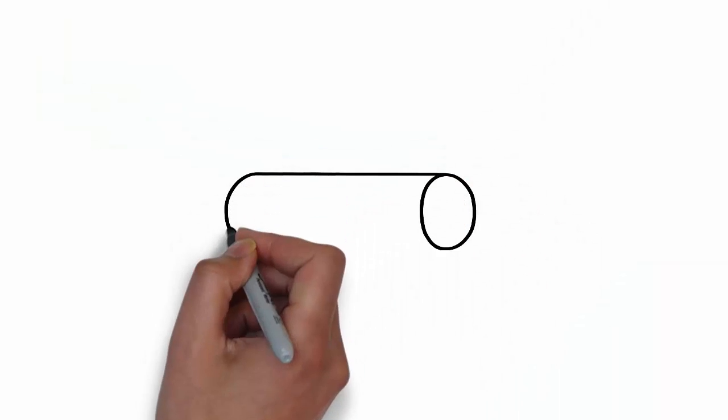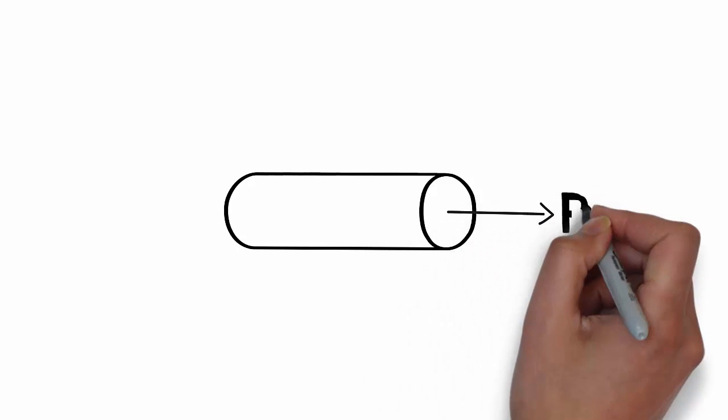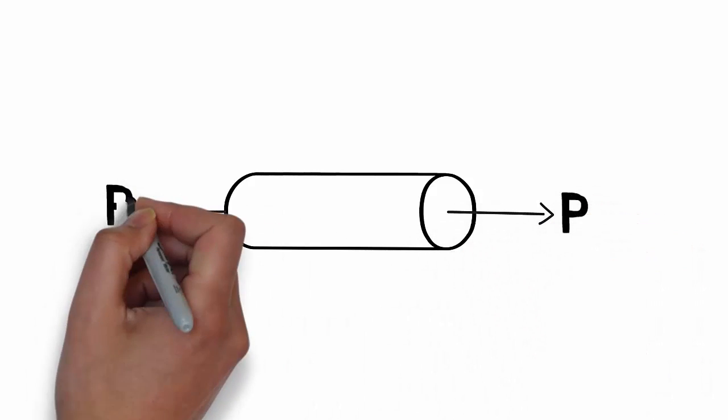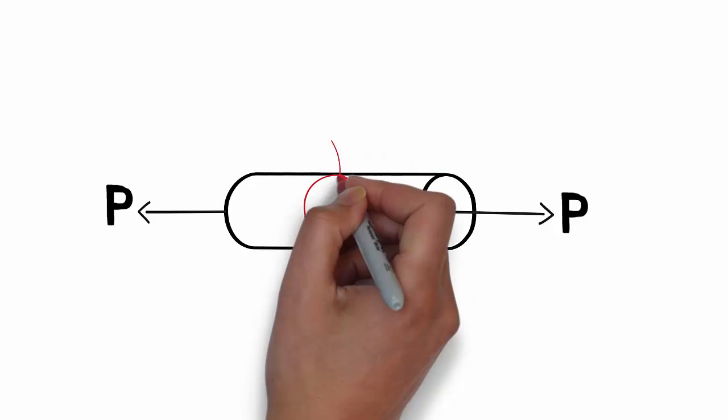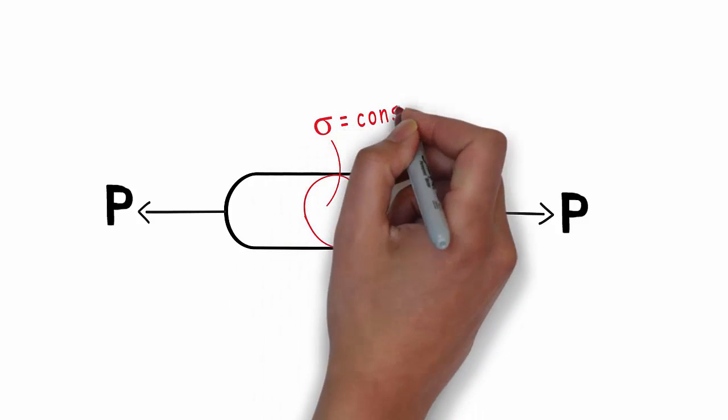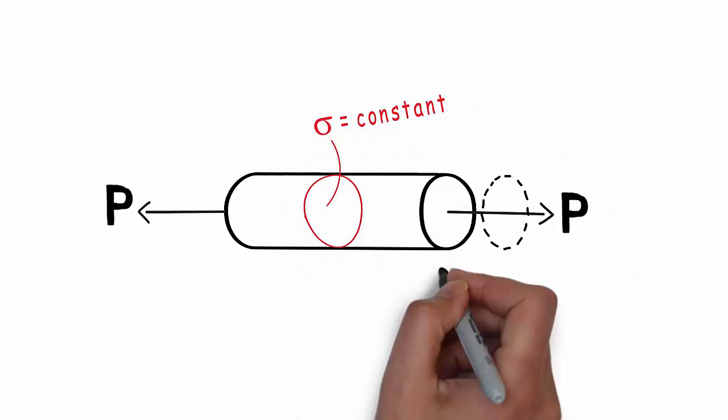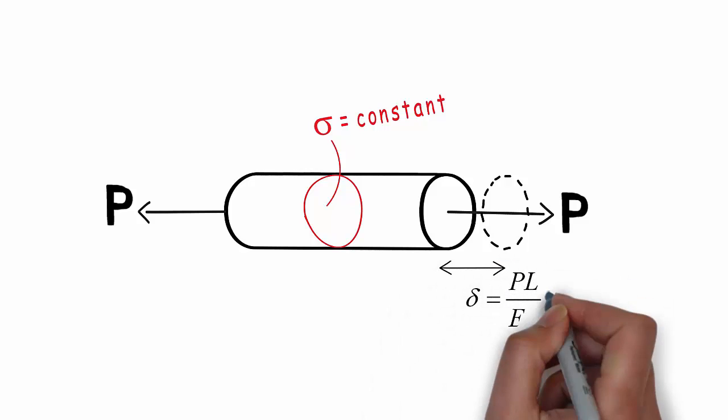In developing the force displacement relationship for an axially loaded member, such as the tensile rod shown here, we established that the deformation and the resulting stress distribution due to the resultant tensile load P are both uniform.